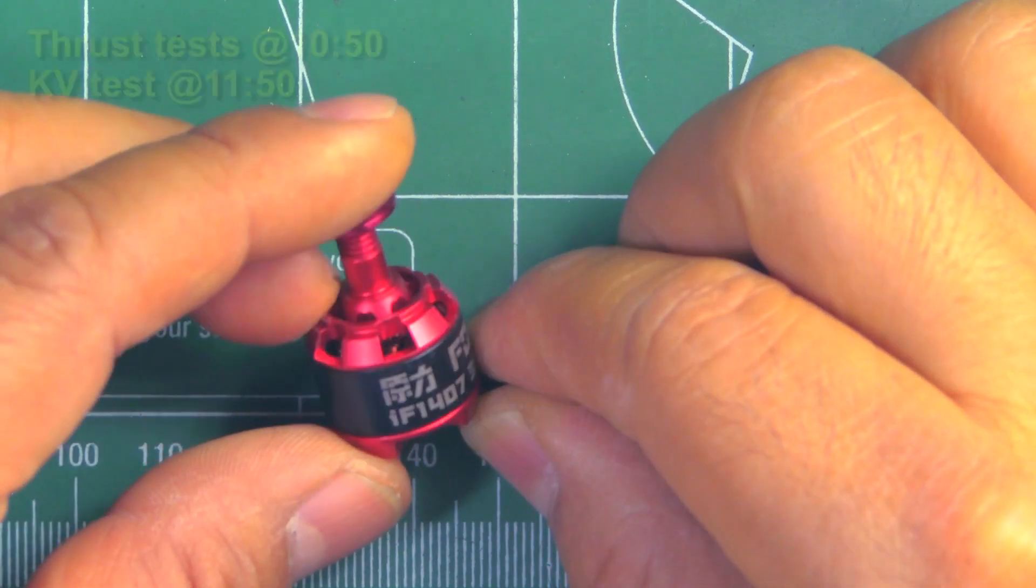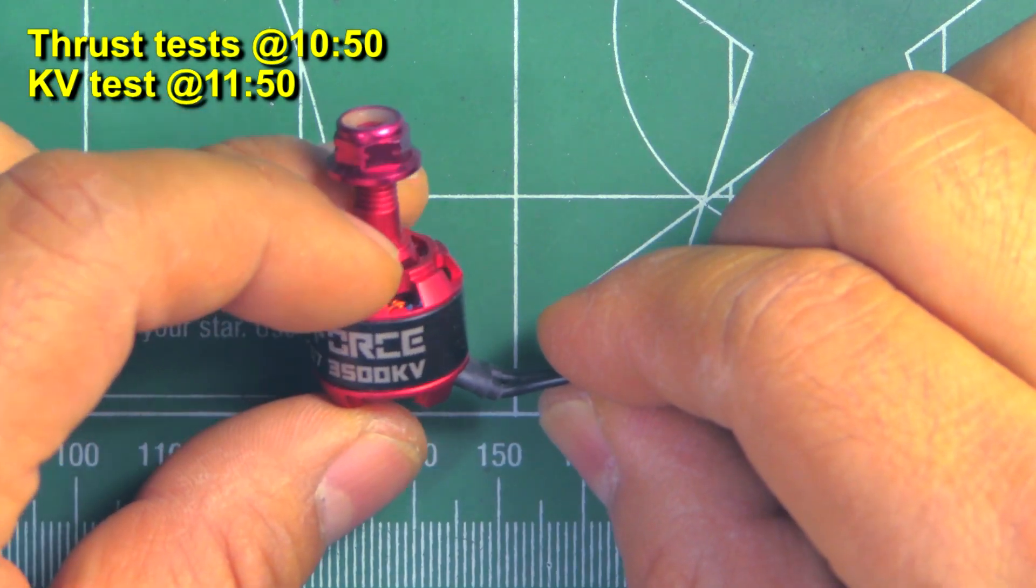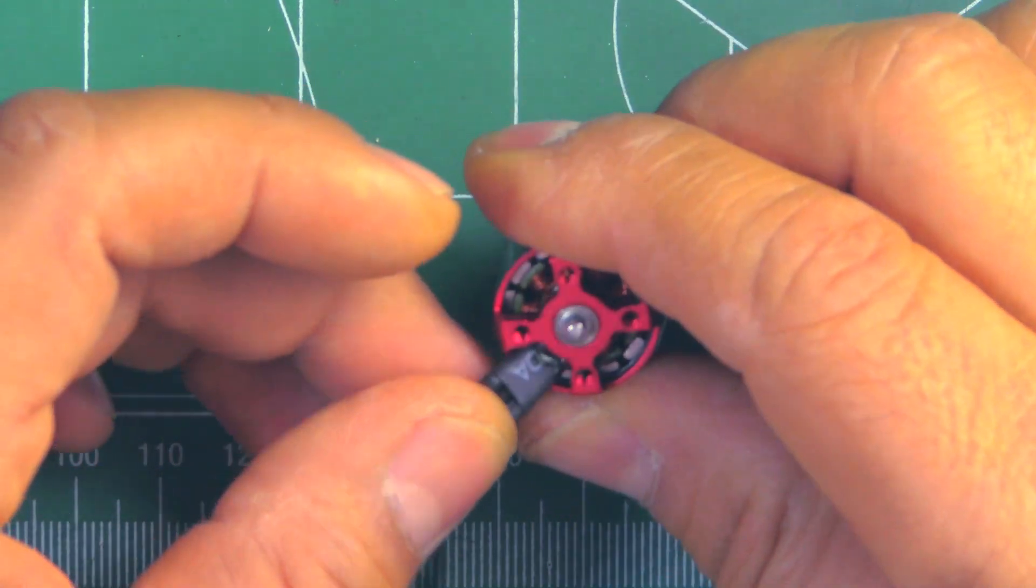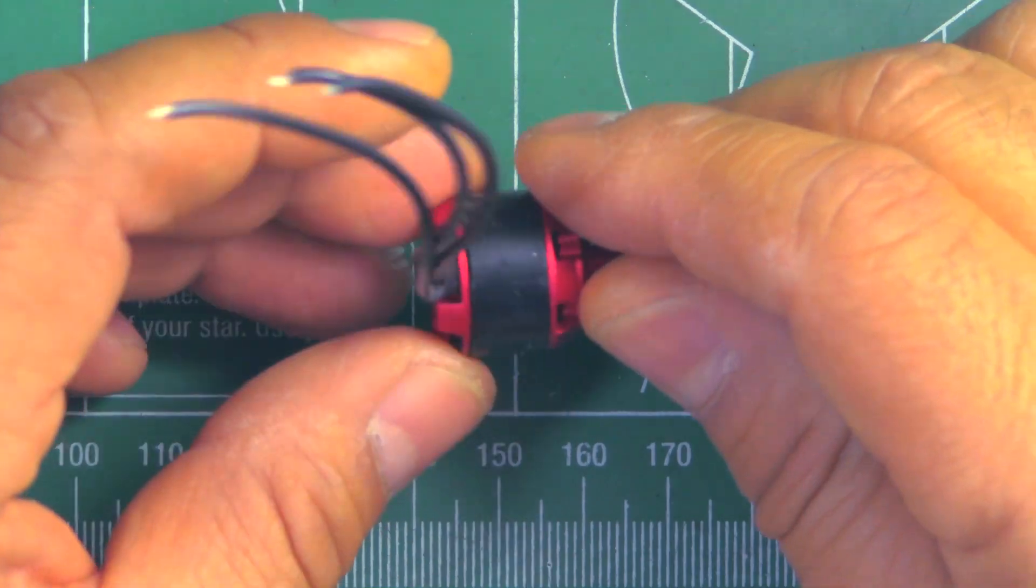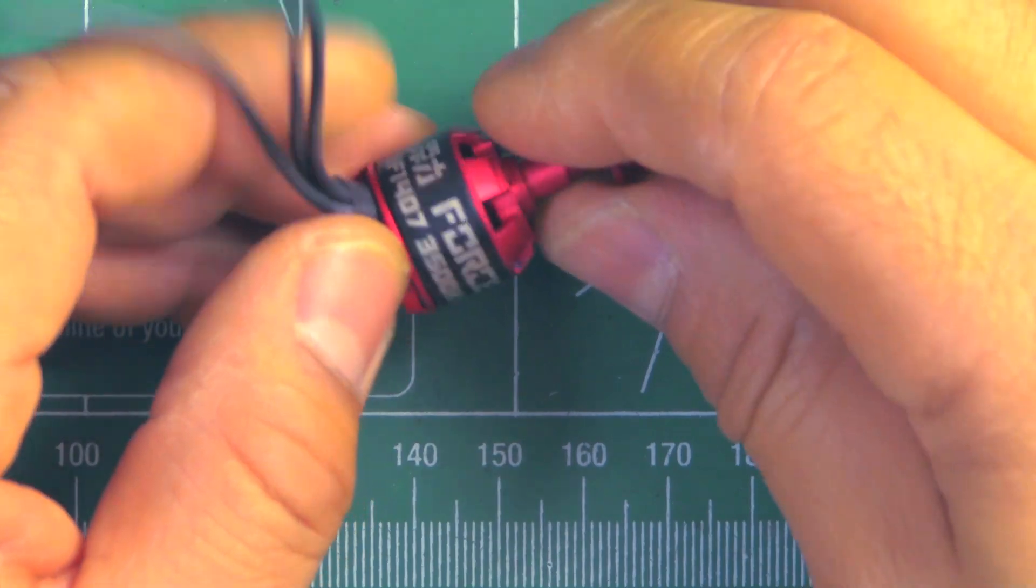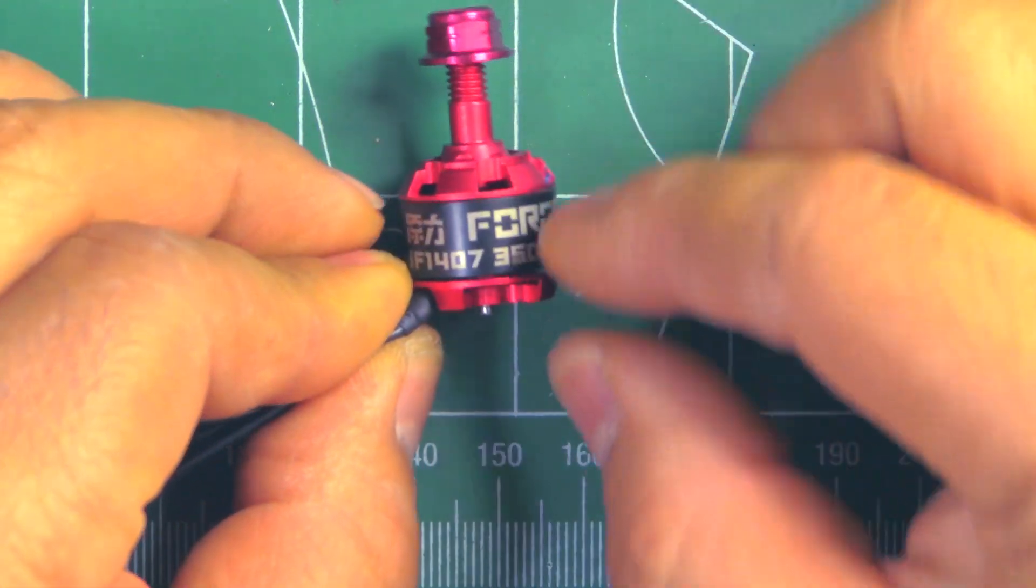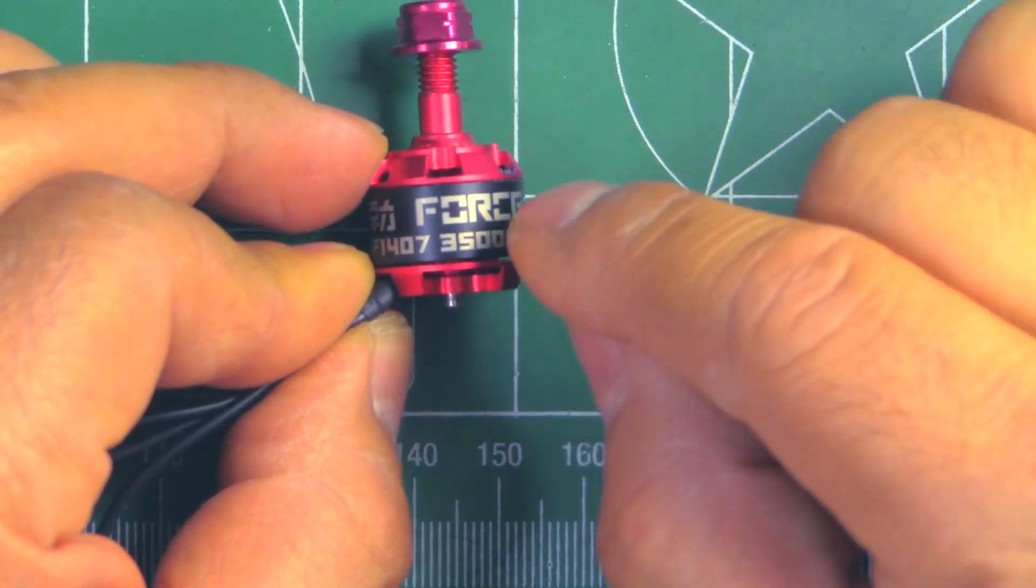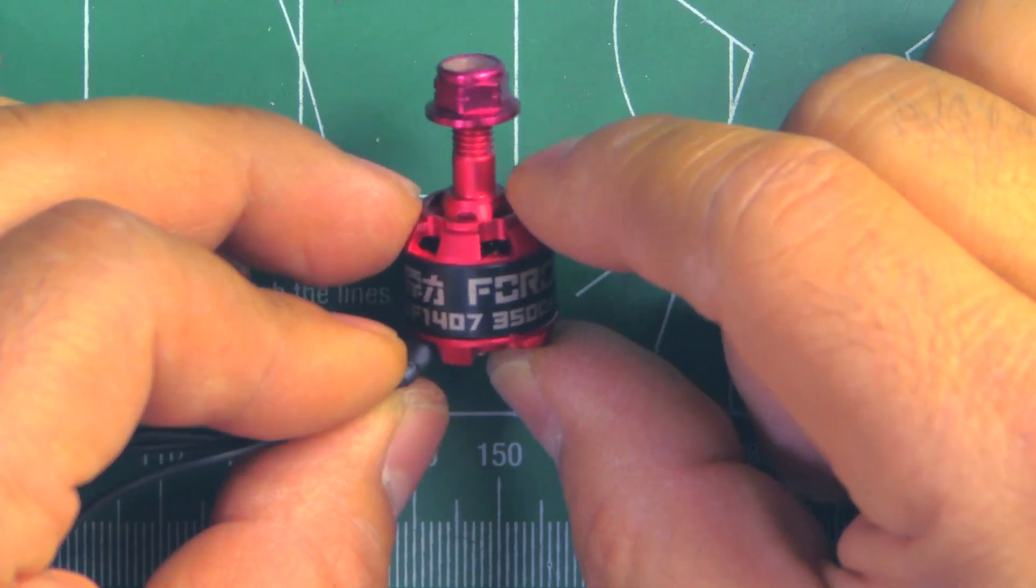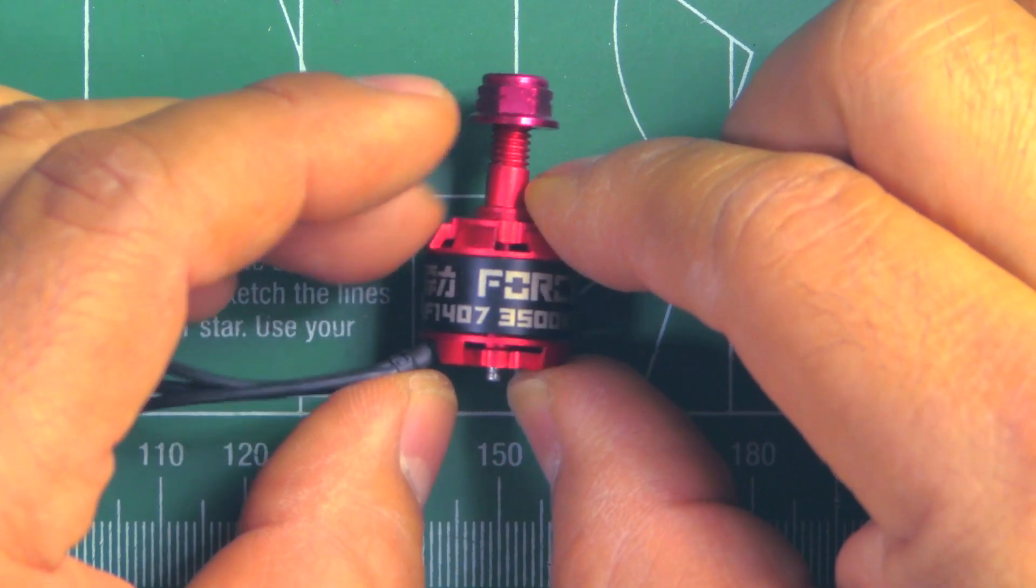Alright, so here we have the iFORCE IF 1407 3500kV motor. This was sent in by iFly IRC.com, thanks for sending it so I can put it through the thrust stand and see what it can do and compare to other motors. Again, another addition to the already quite popular 1407 class of motors, powering 3 inch and 4 inch props, and some people running 5 inch, but I think these are better for 3 and 4 inch props.